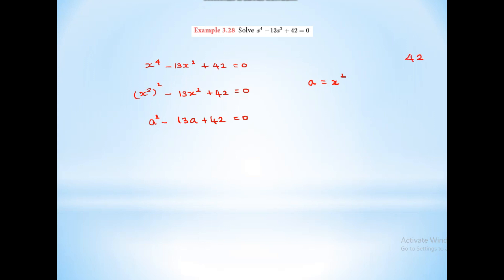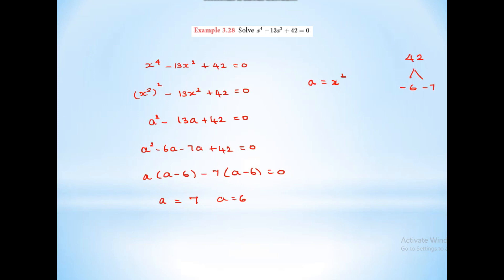So a² minus 6a minus 7a plus 42 equal to 0, giving a(a minus 6) minus 7(a minus 6) equal to 0. Therefore a equals 7 or a equals 6. Since a equals x², the first condition is x² equal to 7 and the second is x² equal to 6. So x equals plus or minus √7 and plus or minus √6.